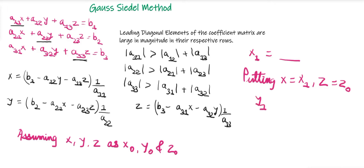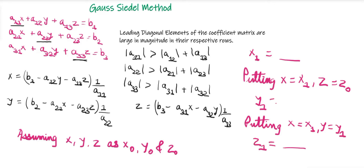In the Gauss-Jacobi method, we take x, y, and z as x0, y0, and z0 (all equal to 0) and find x1, y1, and z1 simultaneously. But in Gauss-Seidel, we find x1 first, then immediately use x1 (with z0) to find y1, then use x1 and y1 to find z1. We continue this process until two successive approximations are nearly equal.